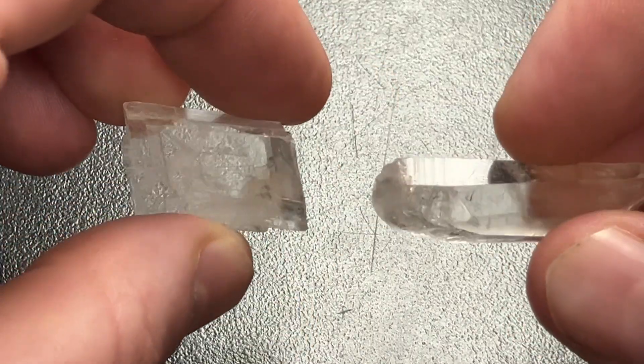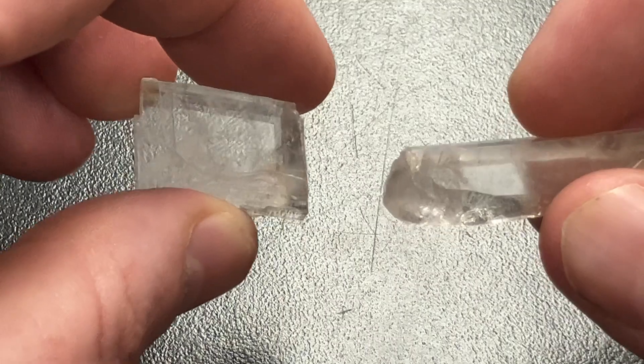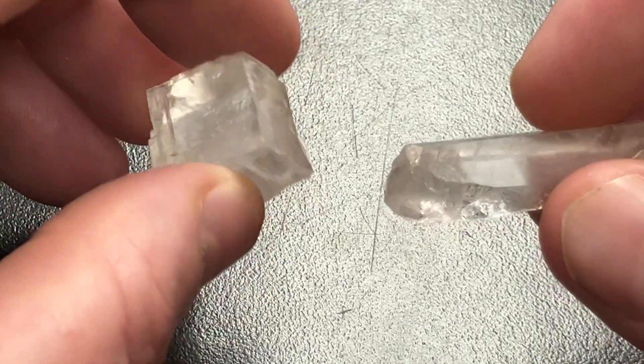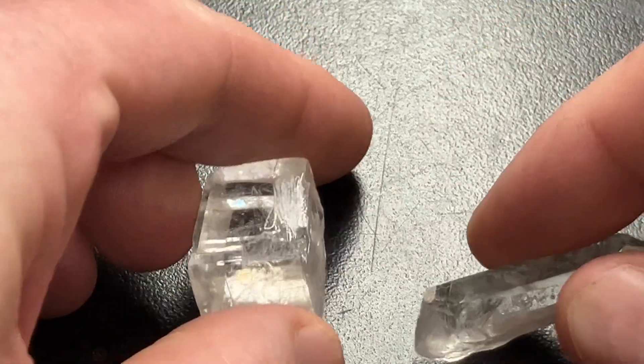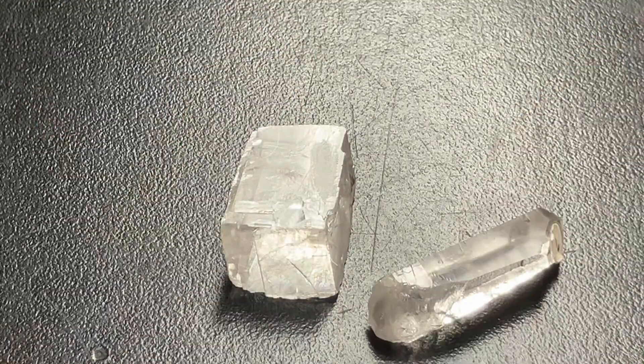They are both often clear, although they can also come in lots of colors, depending on if they have impurities. But how would you tell the two of them apart? Well, there's a couple things.